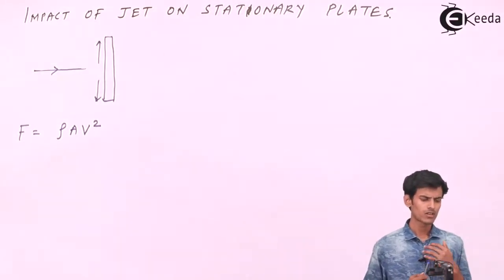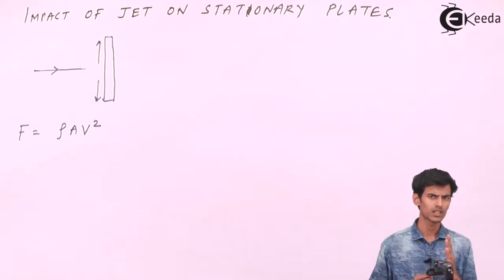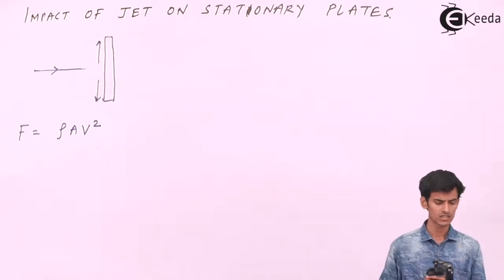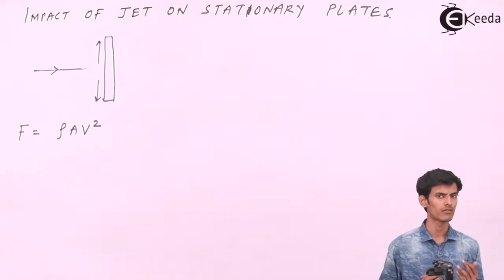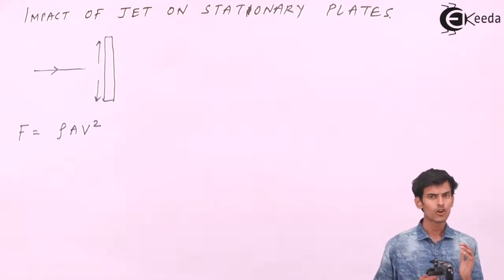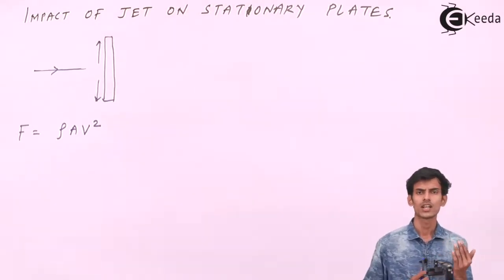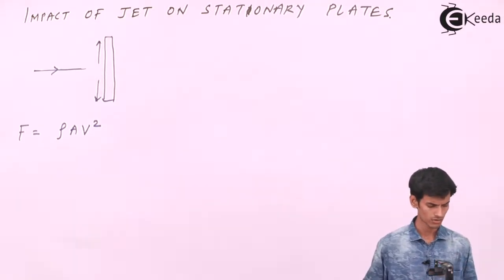The formula for the force exerted on a vertical flat plate is F = ρAV², which we have already derived. This force is the normal force exerted on the plate, so we can write it as F_n, meaning normal force.